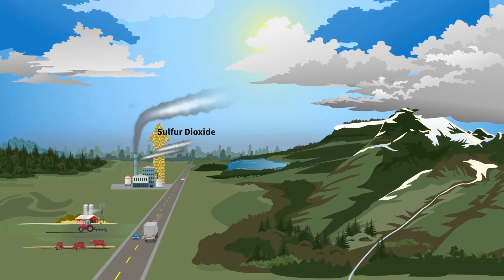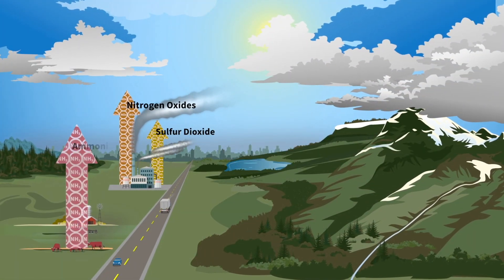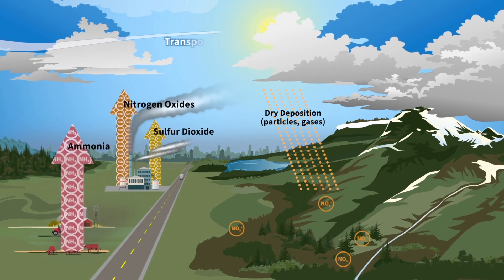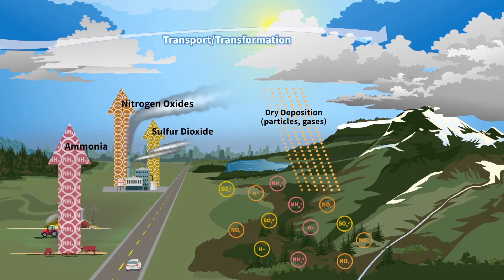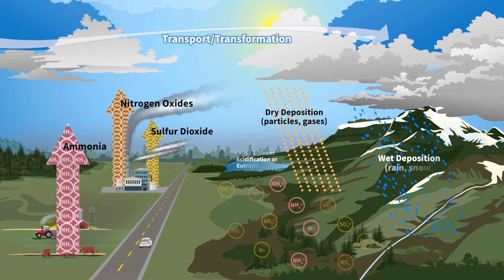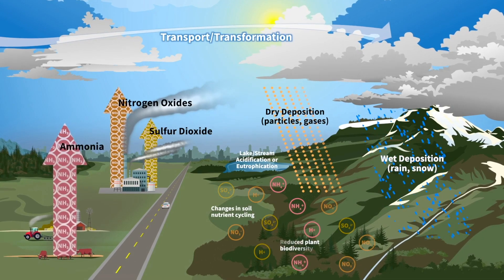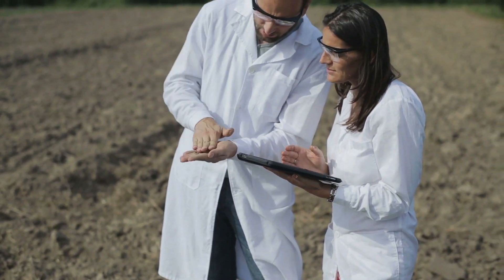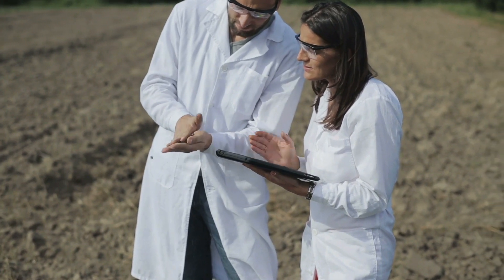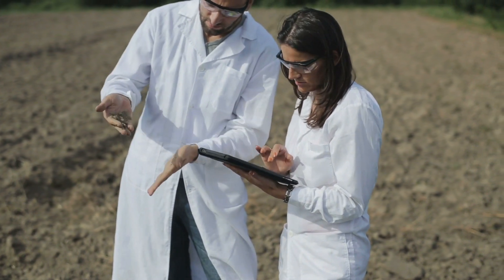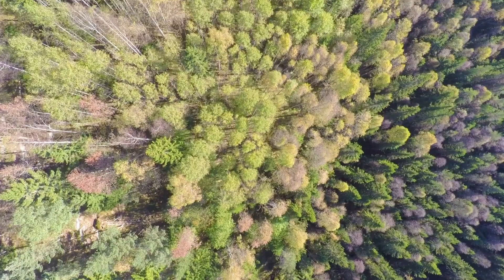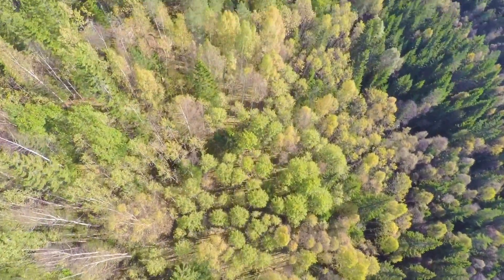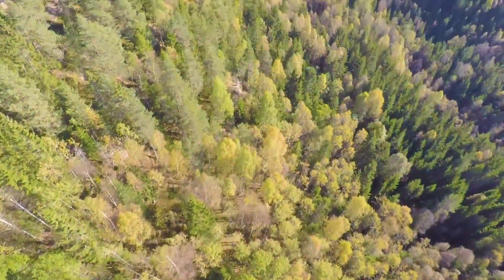Sulfur and nitrogen are two of the most harmful air pollutants. Excess sulfur and nitrogen in an ecosystem can lead to soil and surface water acidification. These compounds can remove nutrients like calcium, magnesium, and potassium from the soil, resulting in soil acidification, which leads to nutrient deficiencies for vegetation.